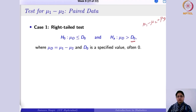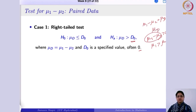In the right-tail test, the difference of the two population means is greater than some quantity. If d-naught is 0, it would mean μ1 minus μ2 is greater than 0, or μ1 is greater than μ2. We use the notation μd because we are dealing with paired data, and if you recall, we take the differences of the two sets of observations and denote them by di's.